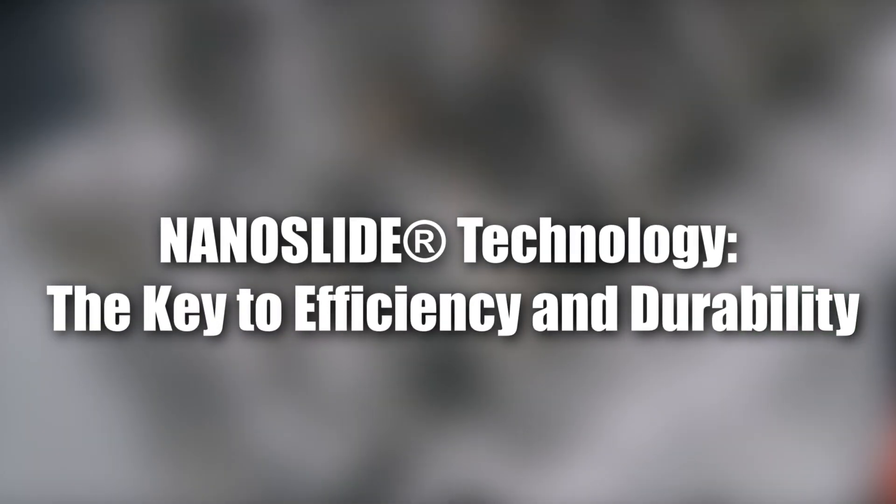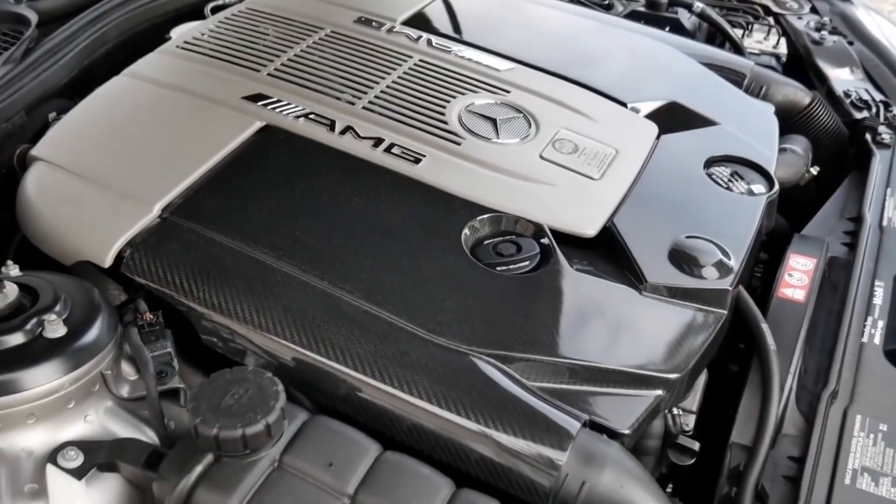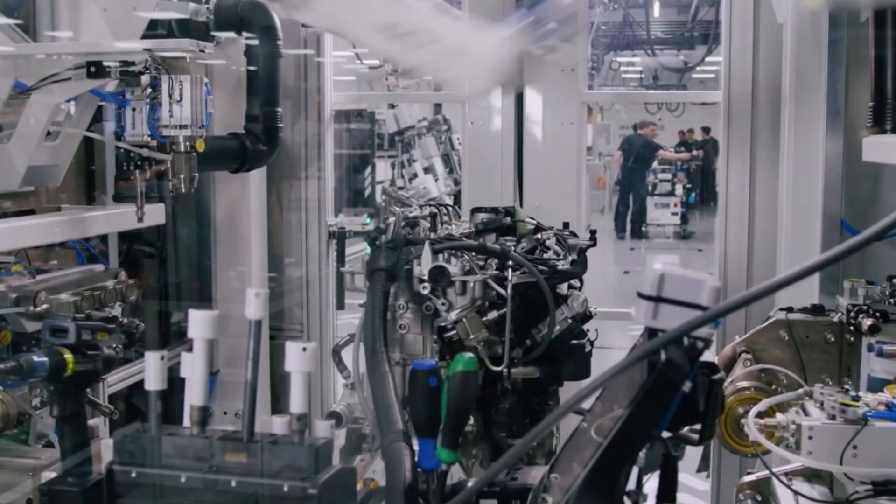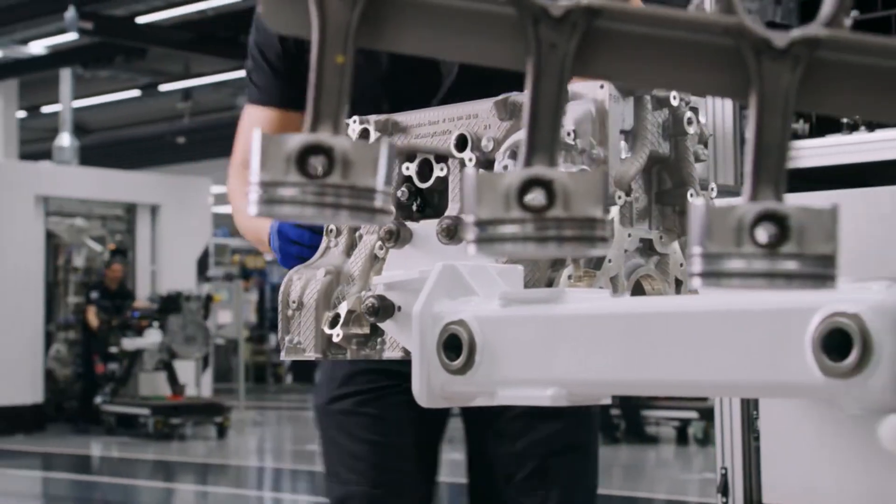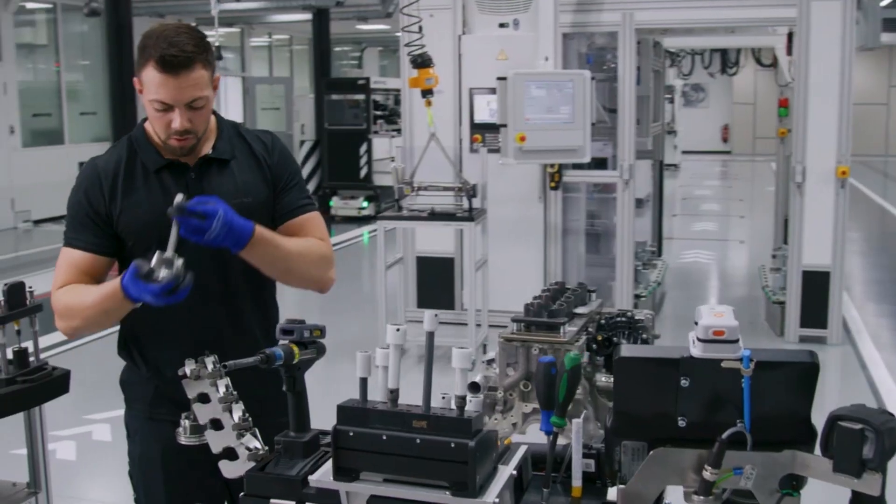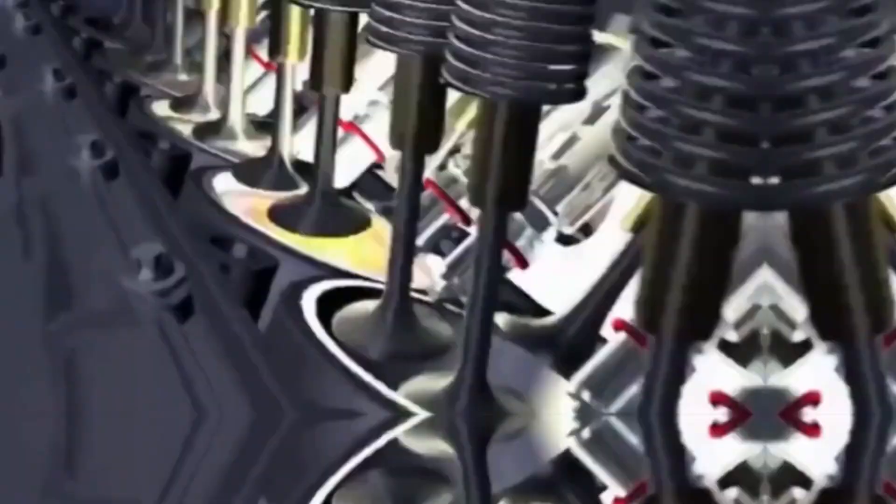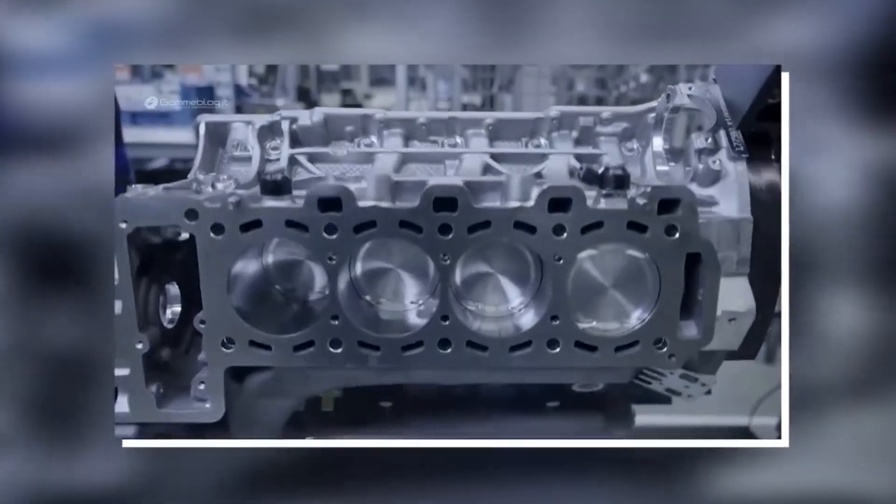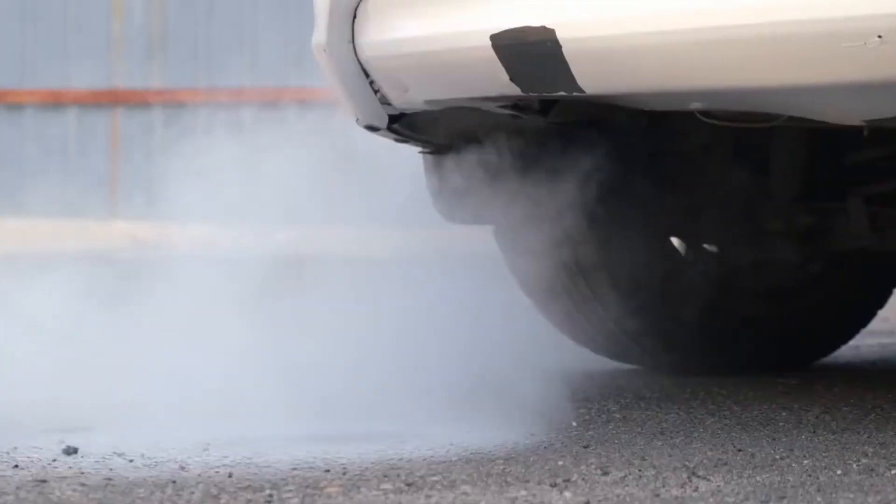Mercedes' patented Nano-slide technology is a standout feature of the M139 engine. This ultra-thin, wear-resistant coating reduces friction between the pistons and cylinder walls by up to 50%. The micro-porous surface retains oil better, enhancing lubrication and ensuring durability. Lighter than traditional liners, it also contributes to reducing overall engine weight. By minimizing internal friction, Nano-slide technology allows the M139 to achieve superior efficiency, making it a true innovation in modern engine design.